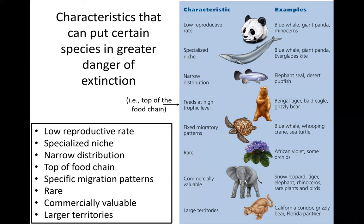These are some examples of different animals and plants that are in danger of extinction or that have certain characteristics that make an organism be in danger of extinction.